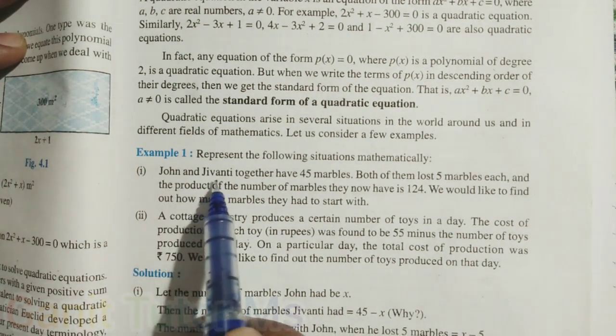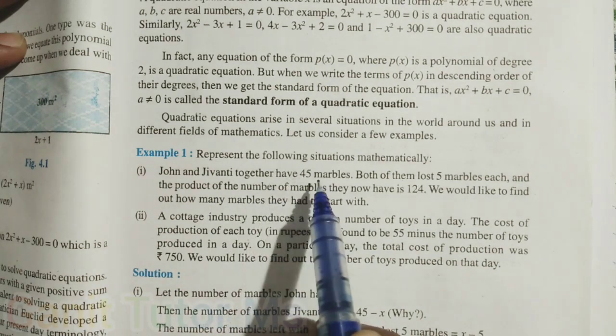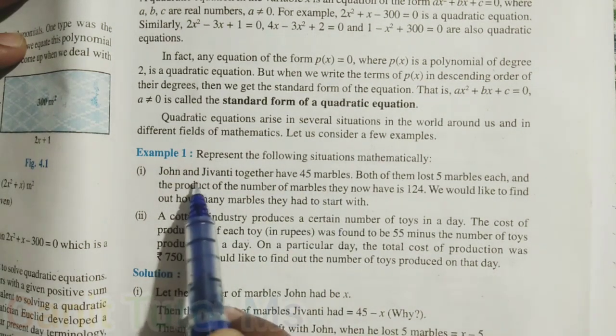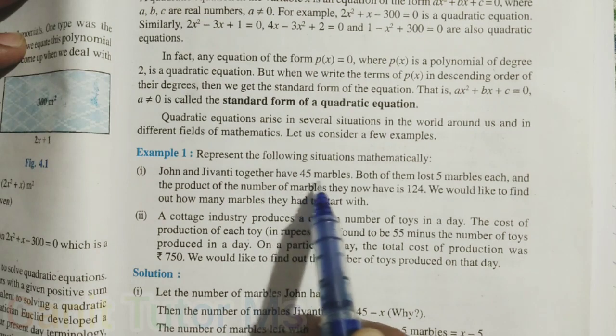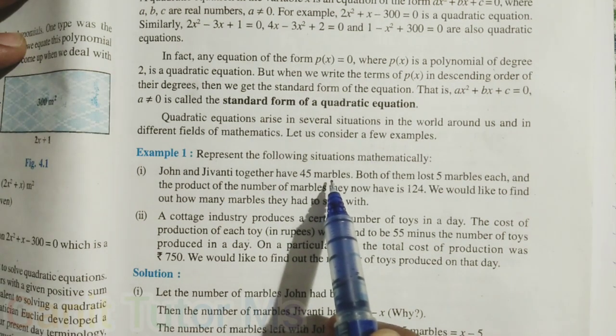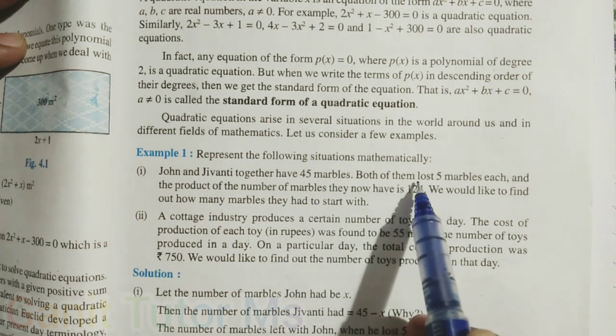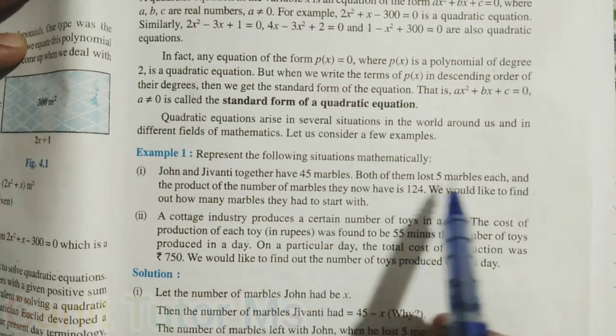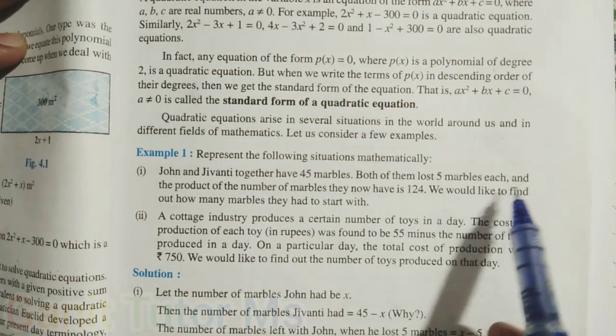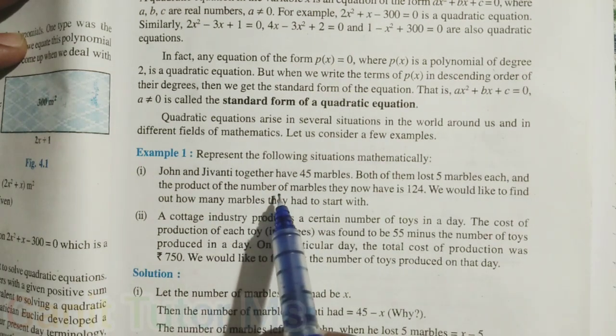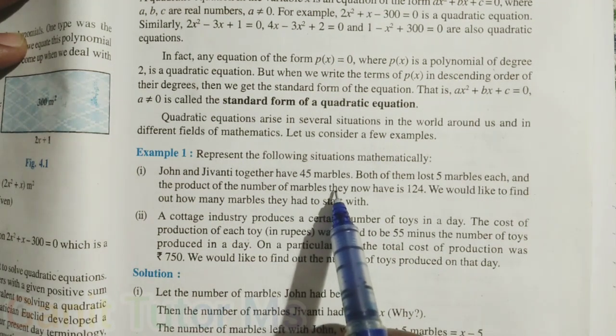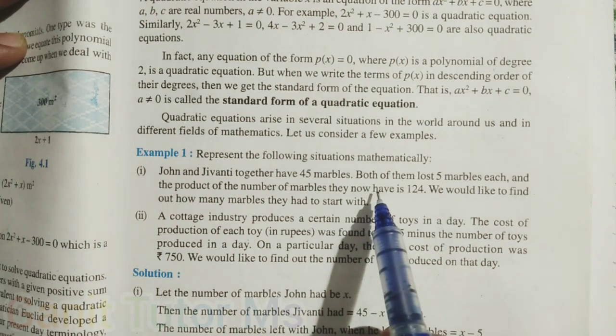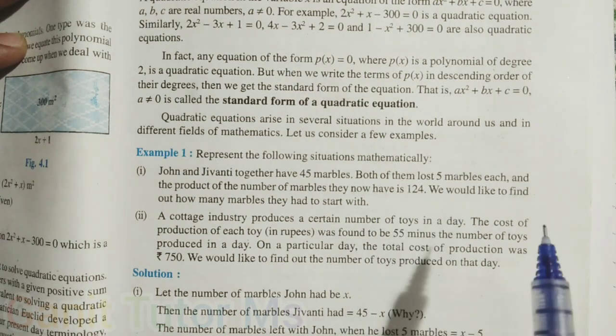John and Jivanti together have 45 marbles. Both together, they have 45 marbles. So the total number of marbles is 45. Both of them lost 5 marbles each. And the product of the number of marbles they now have is 124.